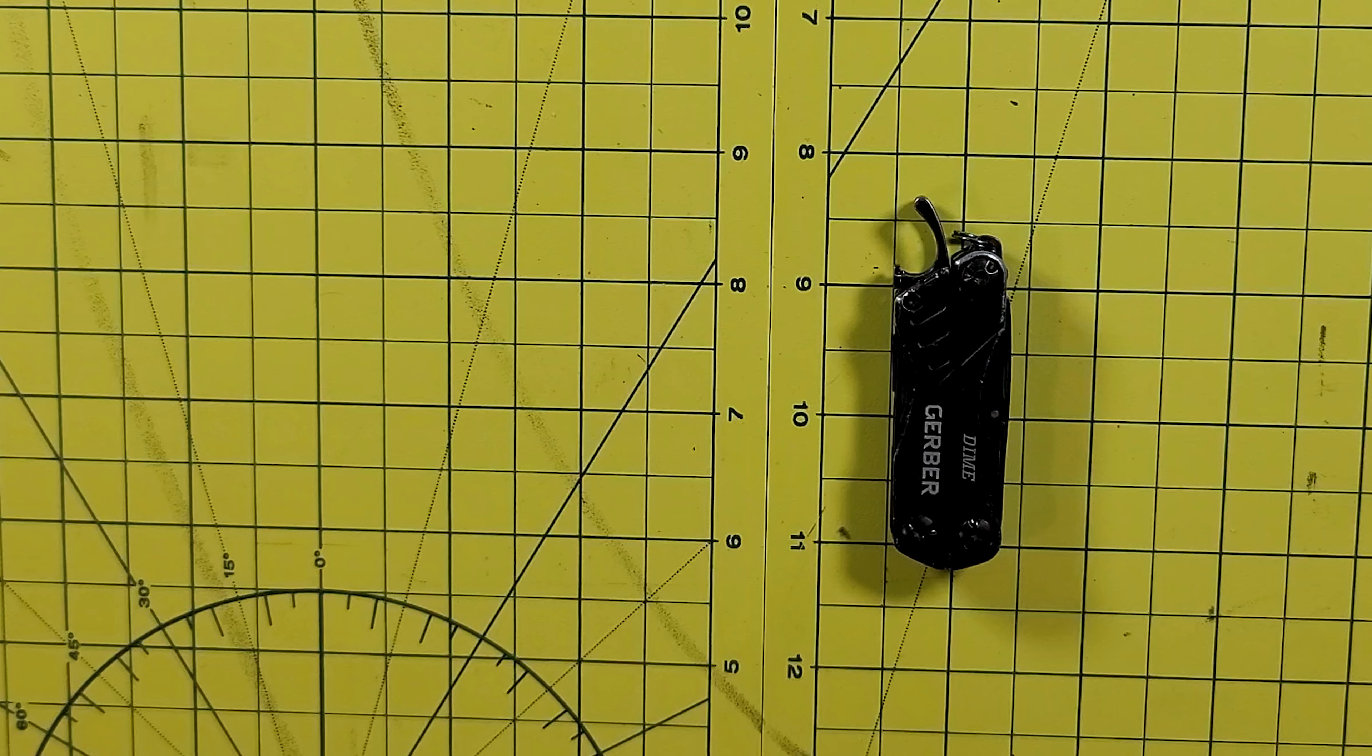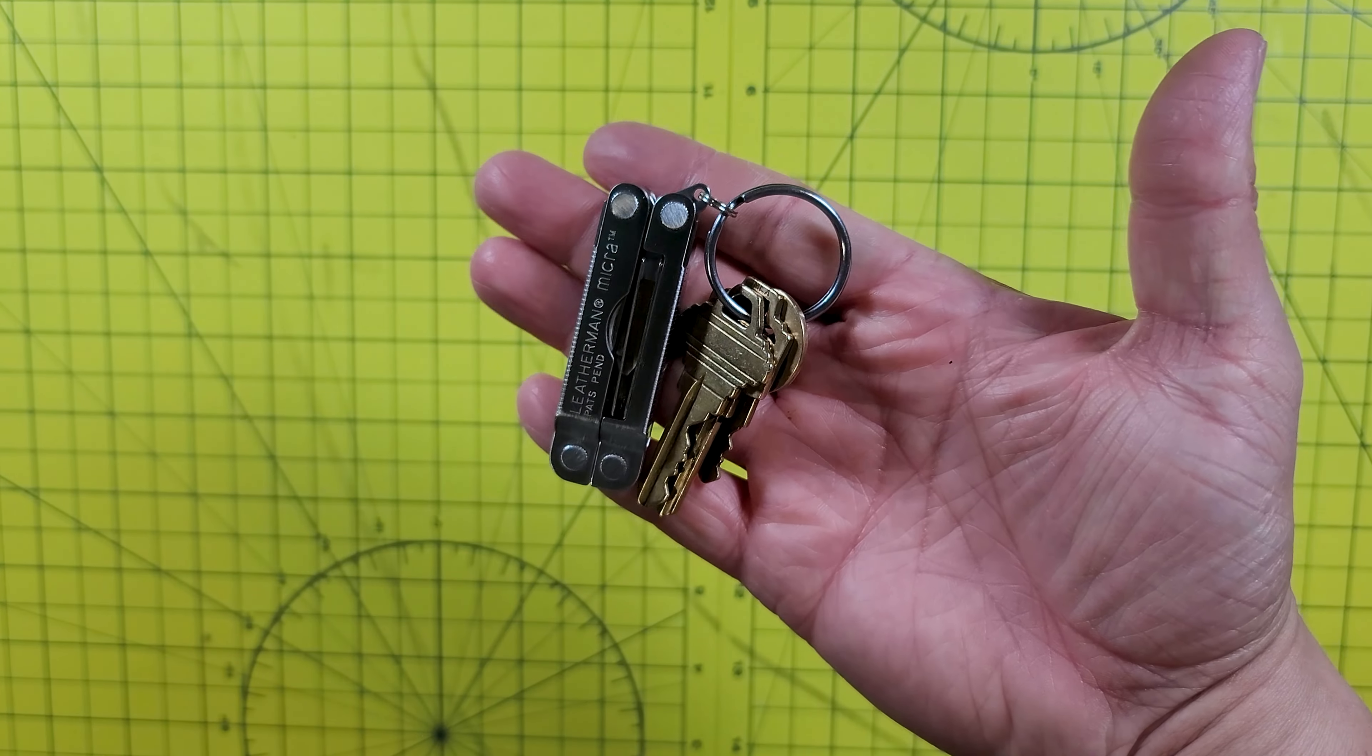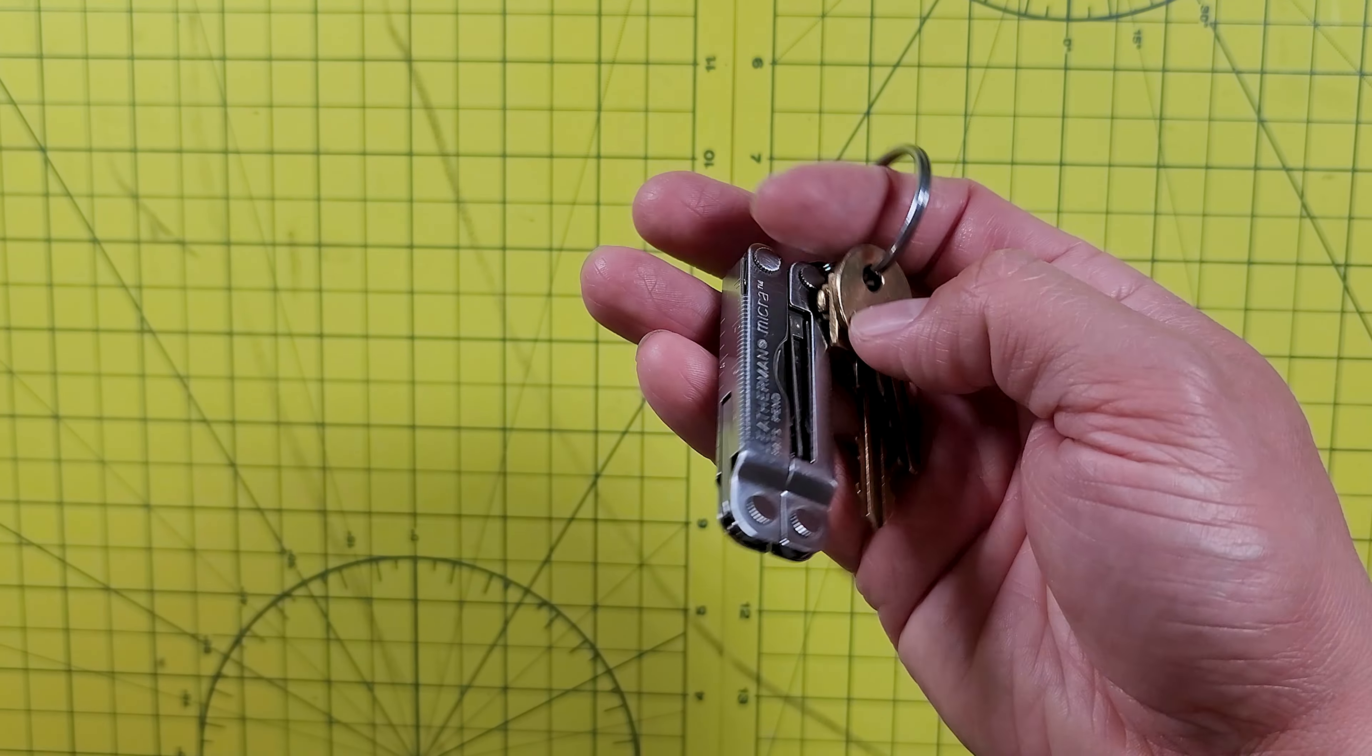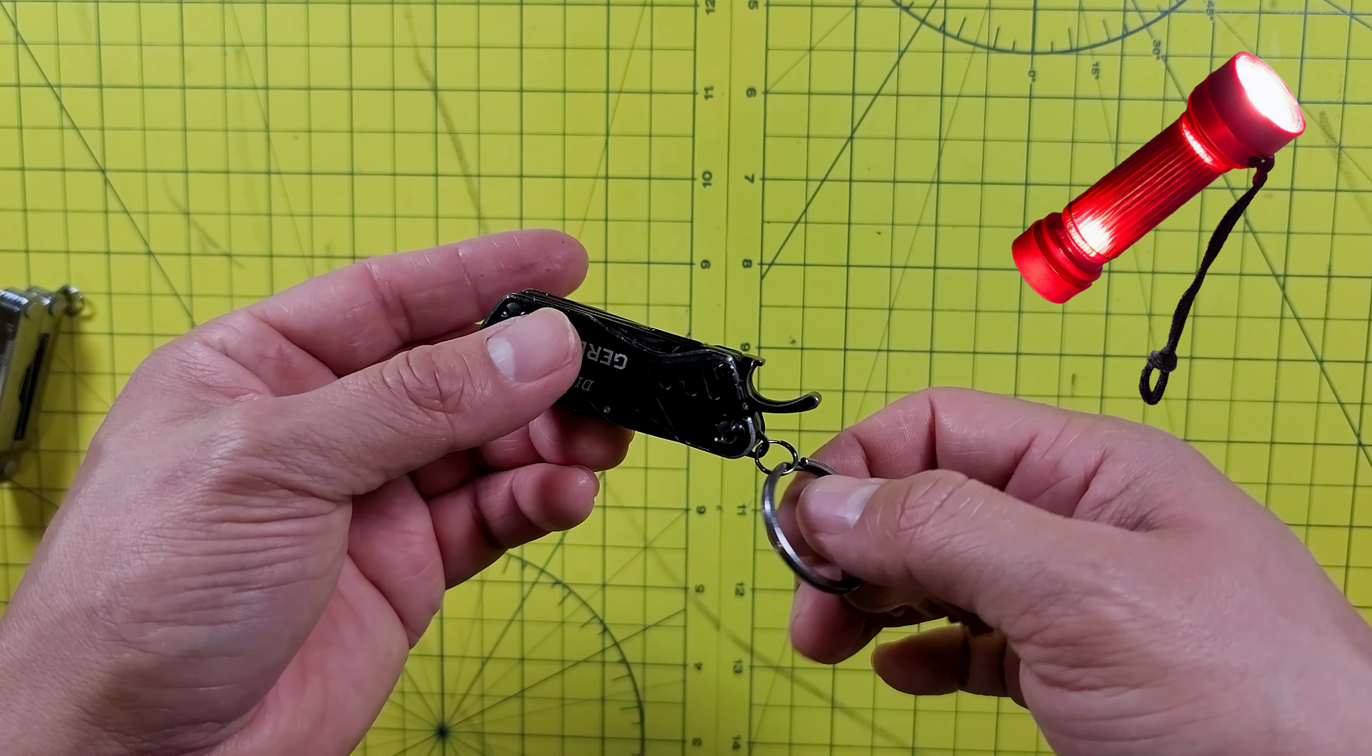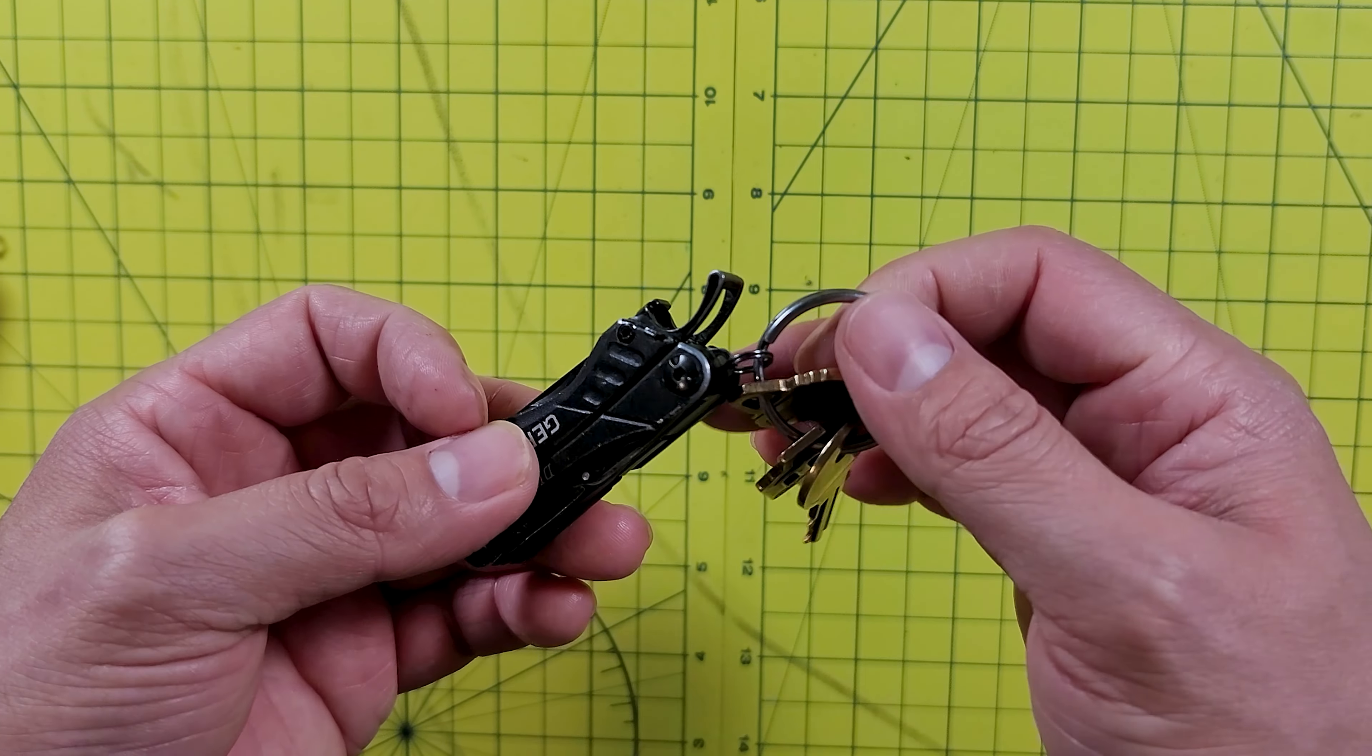When it comes to the weight, the Dime weighs in at 2.2 ounces, while the Micro weighs in at 1.8 ounces. So the Micro is lighter by 0.4 ounces, which may not seem like much. But when you're trying to maintain a lightweight on your keys, this can be very important. I personally don't mind the weight of the Dime since it's minimal, but when you start to carry several other things in your pocket like a flashlight, knife, extra keys, or coin change, all that extra weight starts to add up.